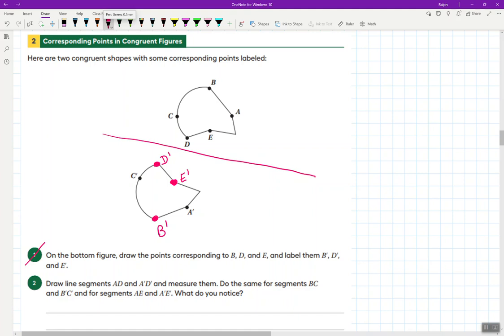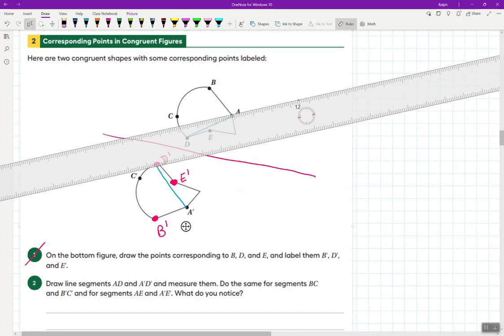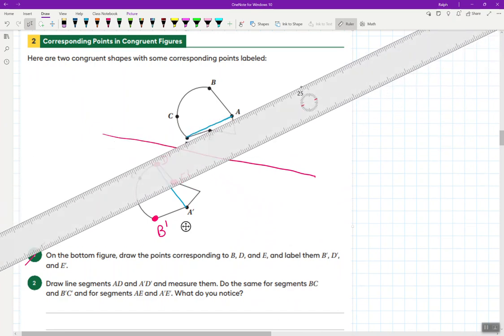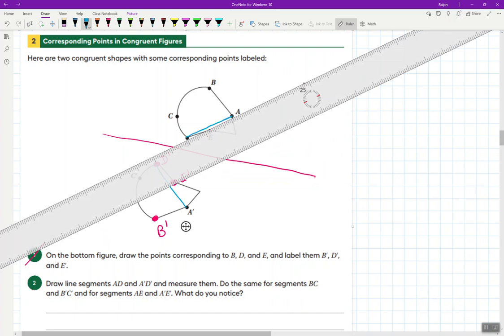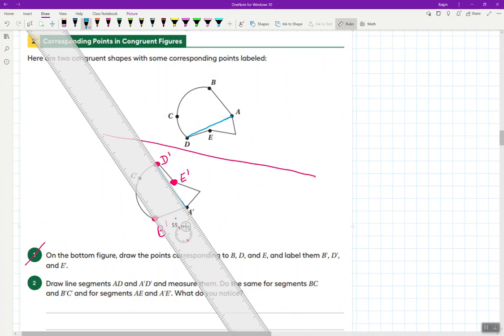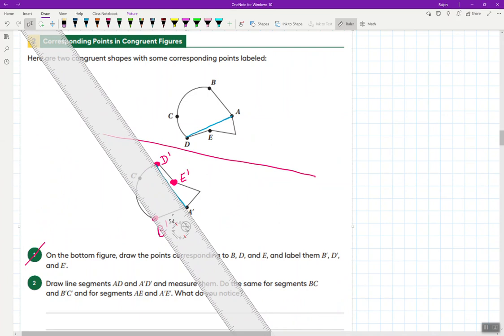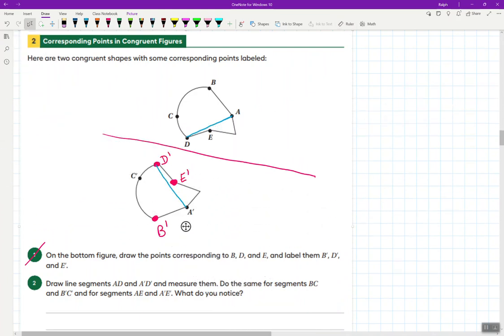For number two, it says draw line segments AD and A prime D prime and measure them. So AD, A prime D prime. So let's do that. I'm going to go ahead and connect AD and it looks like it's this. Let's draw a line there and A prime D prime. So at this stage, I'm not going to necessarily measure them right now, though I do have a handy dandy ruler. So you know what? Why not? Let's go ahead and kind of generally see what it would look like. If I'm looking at my ruler, I can see it doesn't have specific measures here, but I can look at the tick marks and see it goes from one long one all the way to just past the short one here. And I'm just eyeballing it. If you have a ruler, you'd probably be a little more accurate. And looking over here, you can see that it is pretty much the same distance, which probably confirms something we already would know. Do the same for segments BC, B prime, C prime and all that. What do you notice?